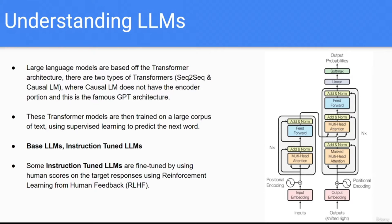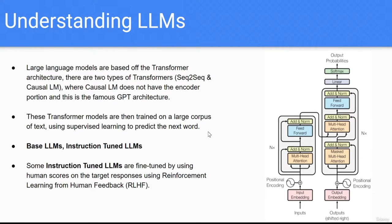Now I said token - you'll commonly see that these models are trained to predict the next best word, and that's a good way to think about it, but it's not accurate. What they actually do is predict the next best token. These models tokenize sentences by breaking words into subwords. For example, 'trained' may be split into 'train' and 'ED' as two separate tokens. Some words like 'on' or 'a' do not have subwords. That's essentially how tokenization works.